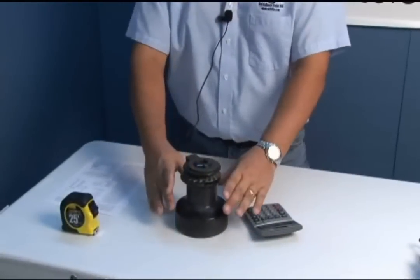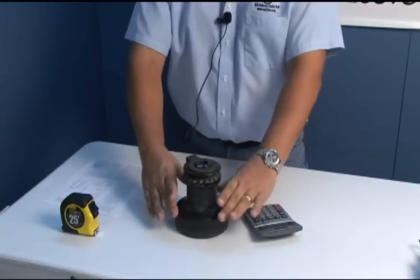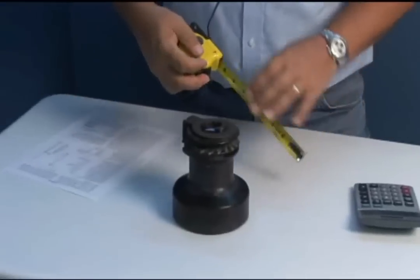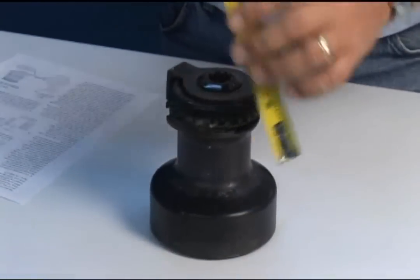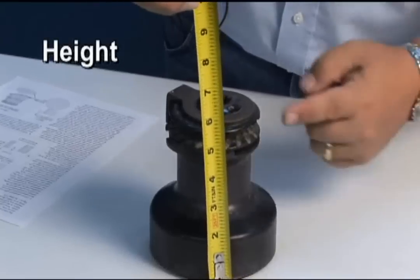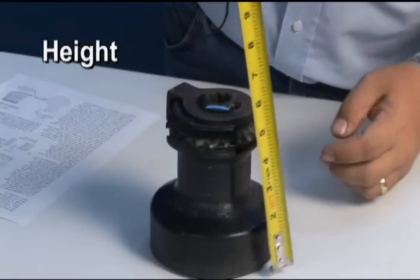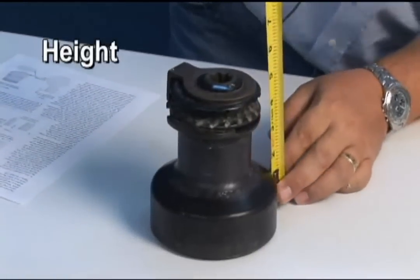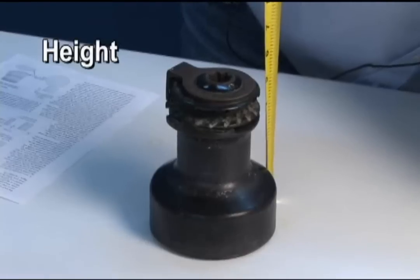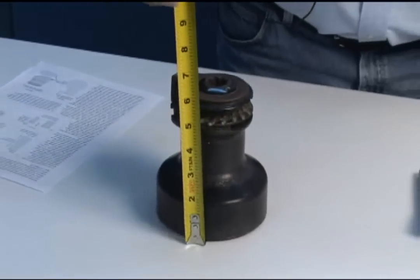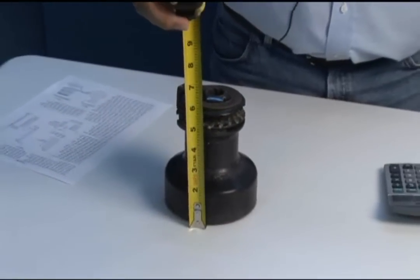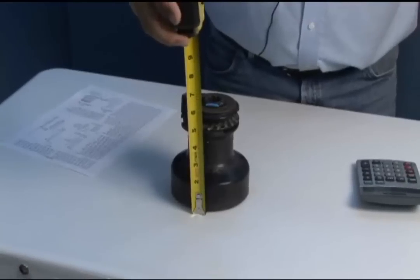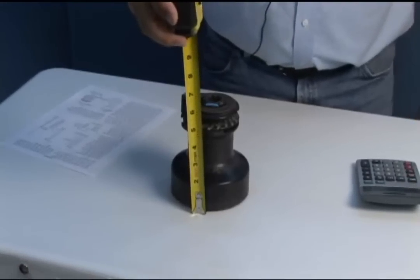So we have measured the diameter. Now we have the circumference. We also want to get the height of the winch. Measure the height right up to the tallest point. I'm going to put the tape measure back here because I can't see it otherwise. It's five and a half inches. That determines the rectangle that we're going to use next, the height and the circumference.